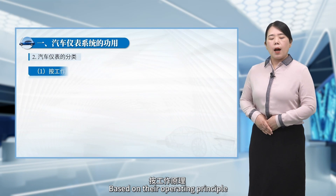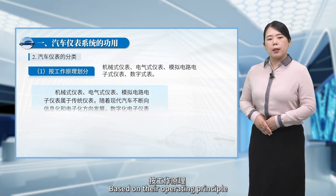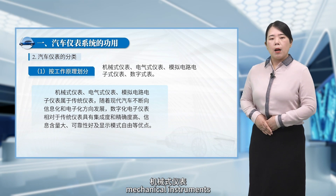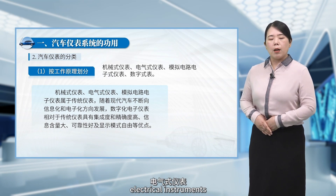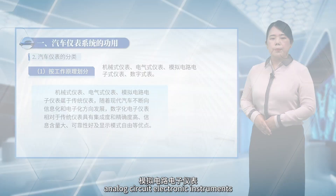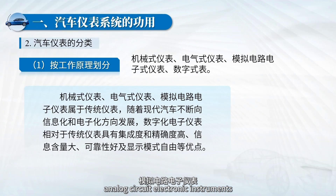Based on their operating principle, these lights can be categorized into mechanical instruments, electrical instruments, analog circuit electronic instruments, and digital electronic instruments.